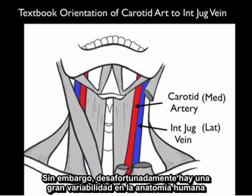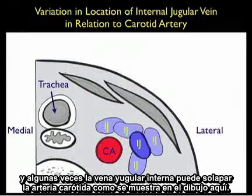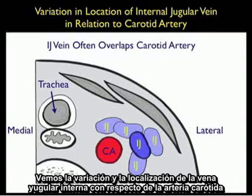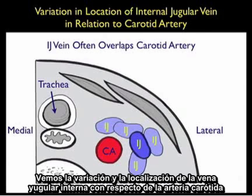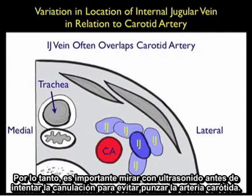However, unfortunately, there's great variability in human anatomy, and many times the internal jugular vein can overlap the carotid artery as shown in the drawing here. Notice the variation in location of the internal jugular vein to the carotid artery — many times the internal jugular vein is located on top of the carotid artery, making it difficult to cannulate. Thus, it's important to look with ultrasound before cannulation attempts to avoid puncture to the carotid artery.